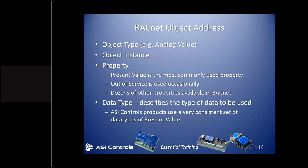Zero-based counting is a little odd at first but becomes intuitive after you do it a few times. There's also what's referred to as a property in BACnet — almost always from a front-end standpoint, Present Value is the property we want to access. There are other properties like Out of Service, which can be used to override an output or input. To override an input, you have to set the Out of Service flag before writing to the Present Value, because an input is normally read-only.